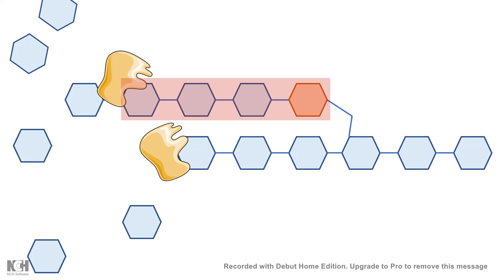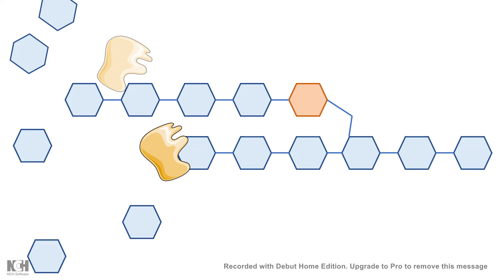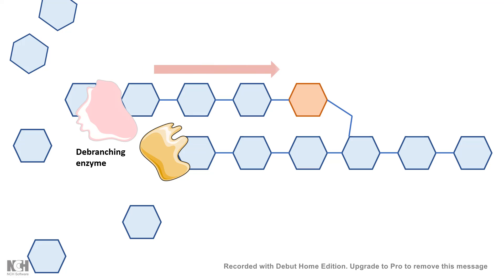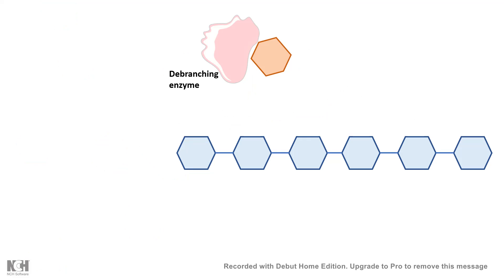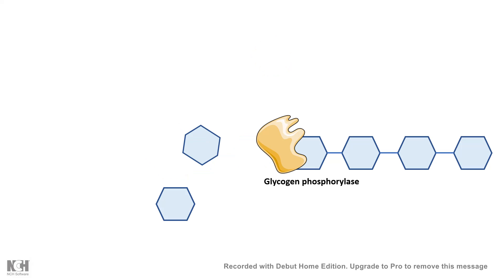Whenever glycogen phosphorylase reaches a branch point — stopping at least four residues away — it halts and is replaced by the debranching enzyme. The debranching enzyme is special because it can break alpha-1,6 glycosidic linkages, which glycogen phosphorylase cannot. It converts the branched segment into a linear chain of glucose, after which glycogen phosphorylase can re-attach and continue degradation. This is how glycogen phosphorylase acts as a rate-limiting enzyme in glycogenolysis.